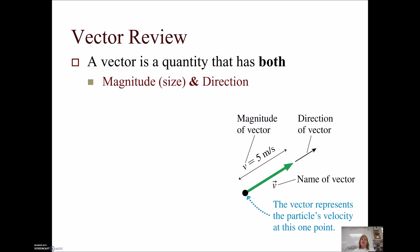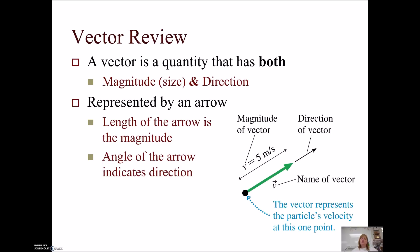Remember, a vector is any quantity that has both a magnitude and a direction. The magnitude is the size, and the direction is just which way. We represent vectors with arrows — the length of the arrow reflects the magnitude, and the angle of the arrow reflects the direction. So here I have a velocity vector: velocity has magnitude and direction. The magnitude is 5 meters per second, at some angle to the horizontal axes, moving in a northeast direction. So vectors have magnitude and direction.